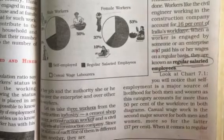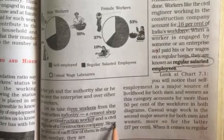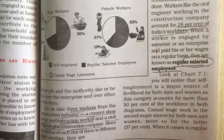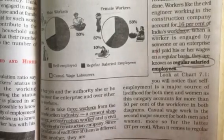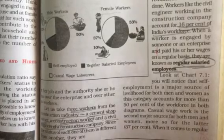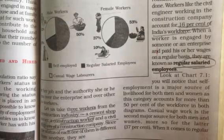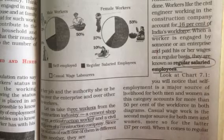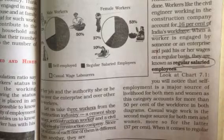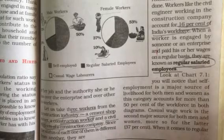From our example, who will be in this category? The civil engineer. He is employed in a firm and is getting salary every month — he is being paid salary every month — so he is a regular salaried employee. So we find these three different categories discussed with examples: one is self-employed workers, second is casual wage laborers, and the third is regular salaried people.